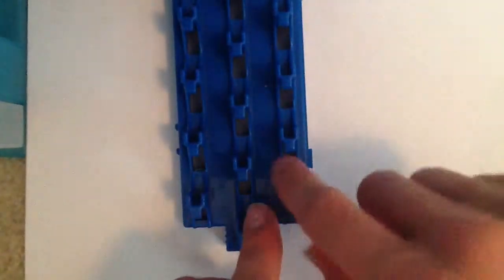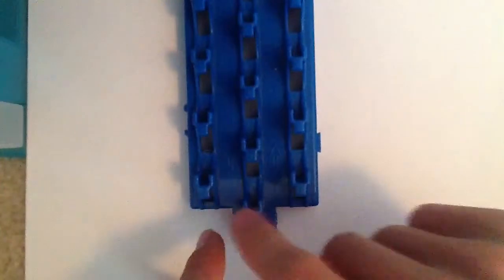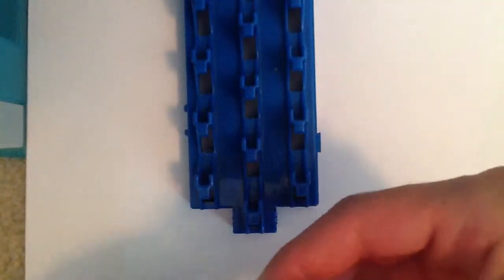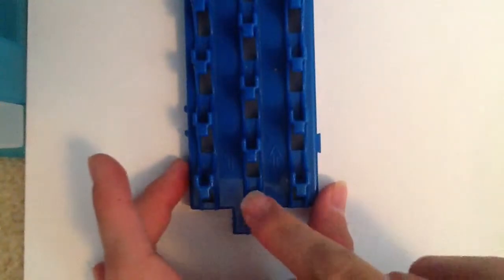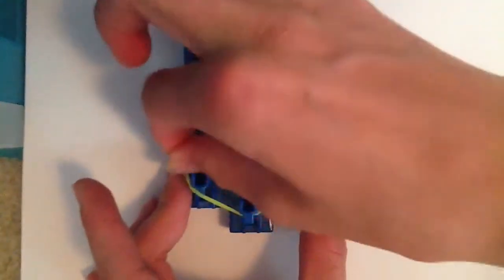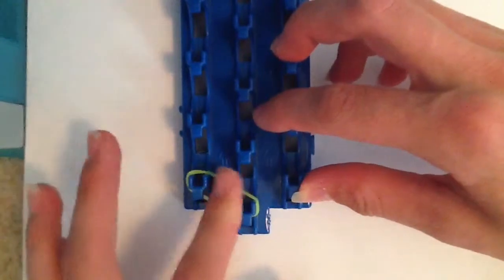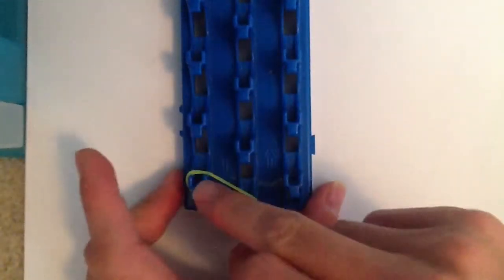So first you want your ears pointing away from you with your zigzag configuration. You will take your first color, mine's yellow, and go from this pink to this pink. And the great thing about this bracelet is that you only need two rows. Then you're going to take your next color and go from here to here.